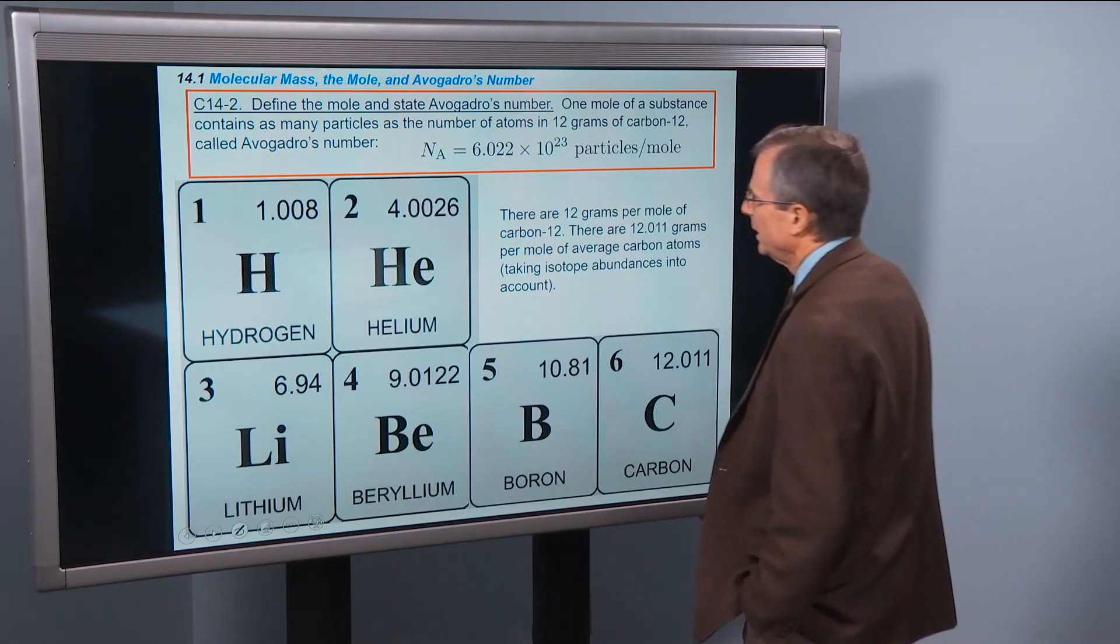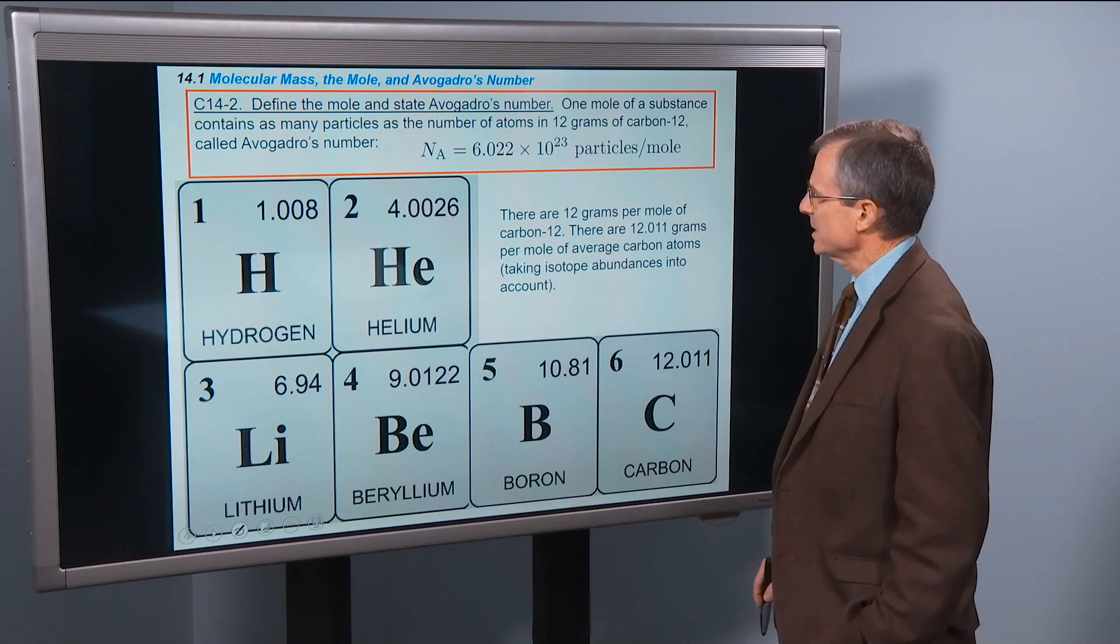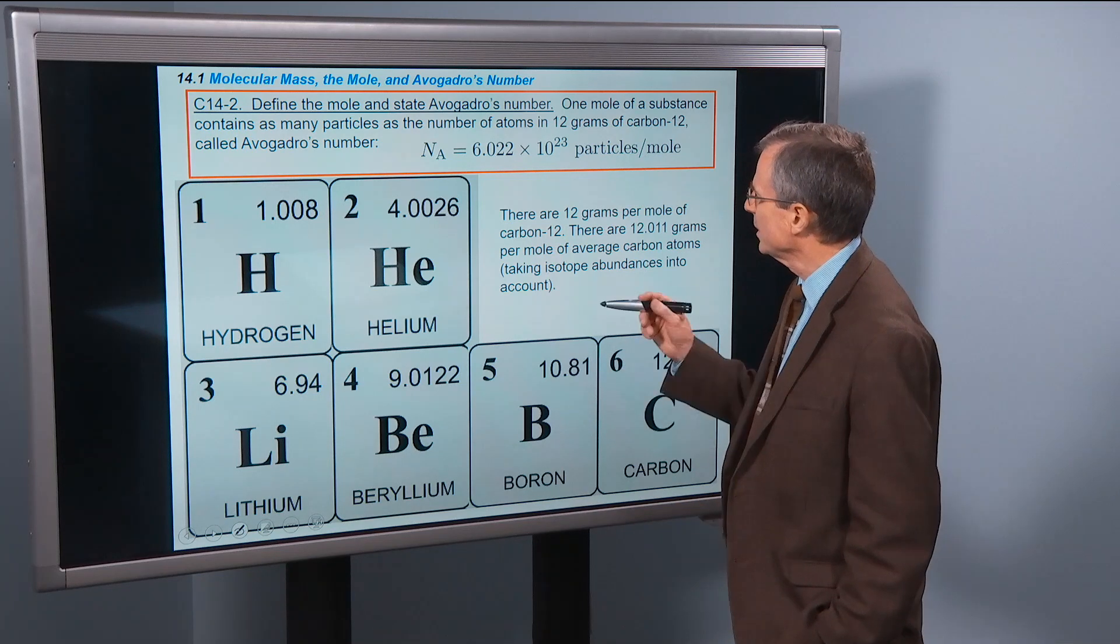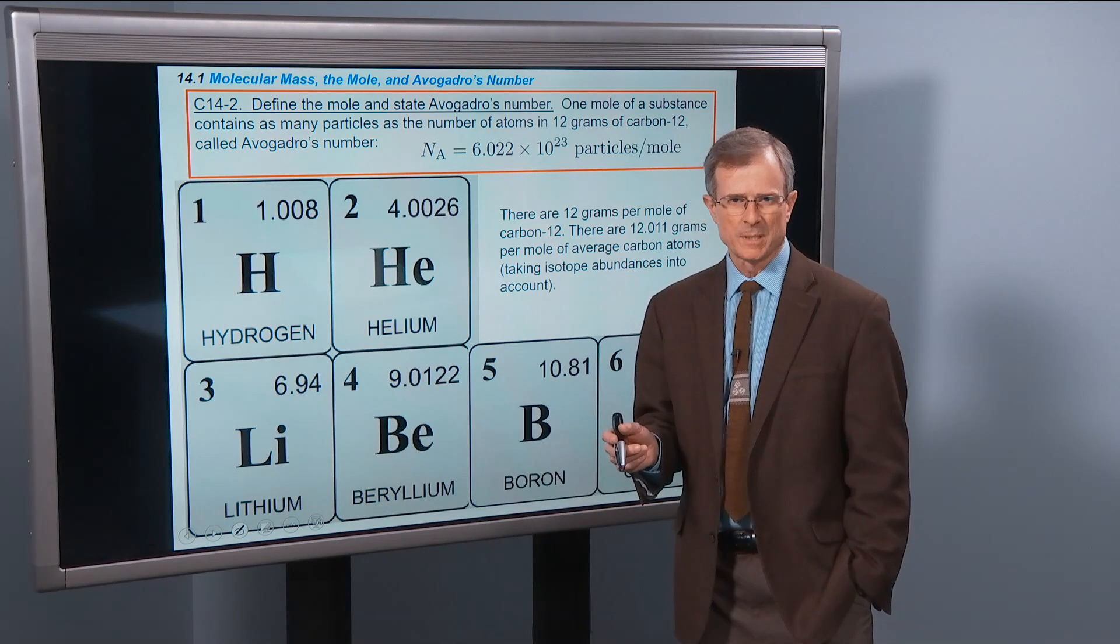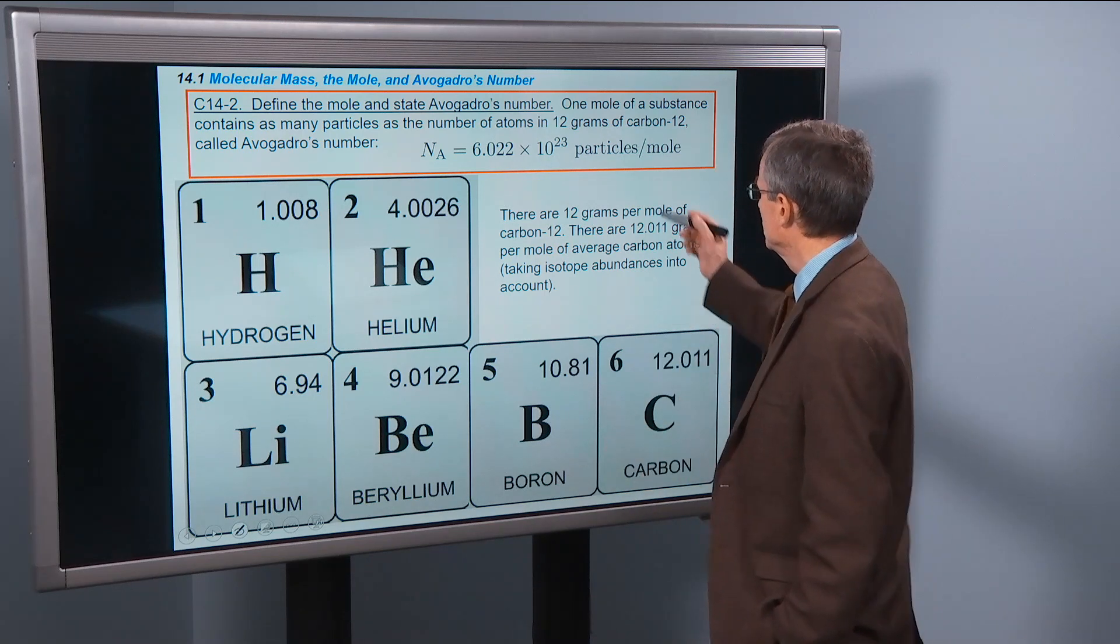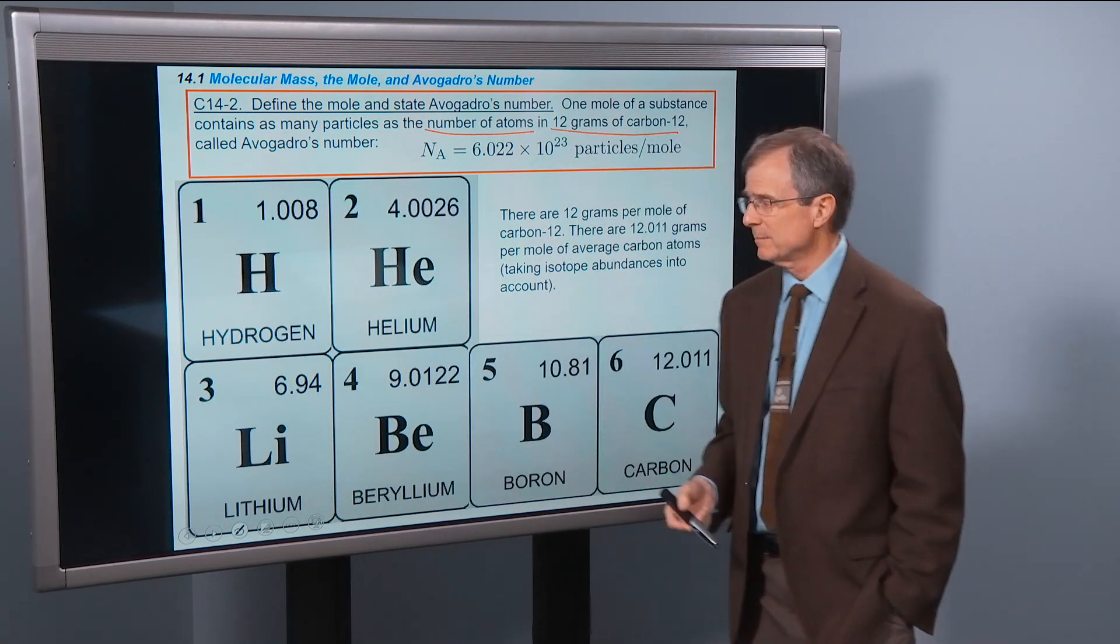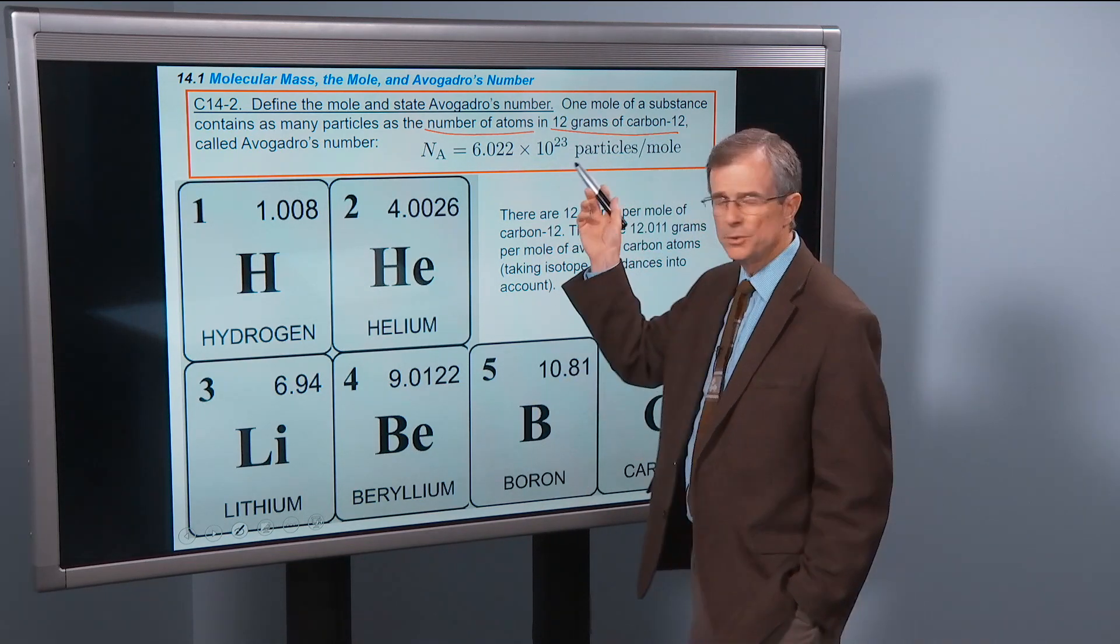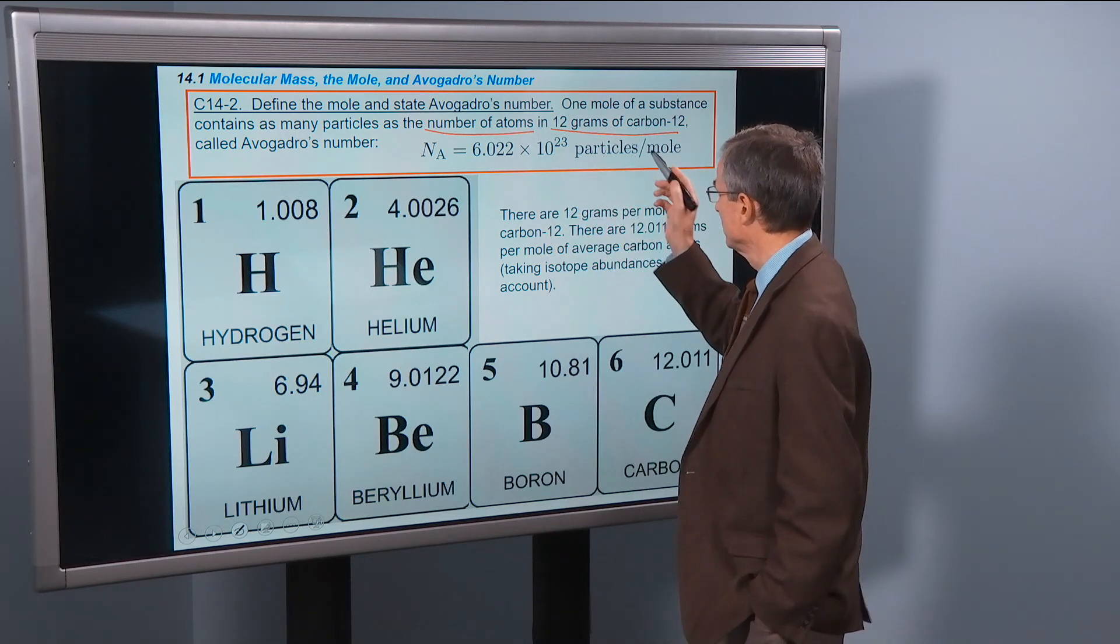Define the mole and state Avogadro's number. One mole of a substance contains as many particles as the number of atoms in 12 grams of carbon-12. It's a number.